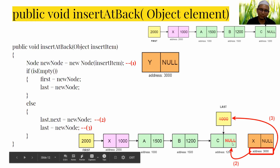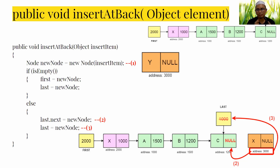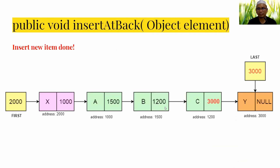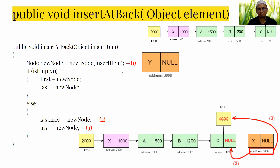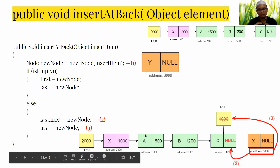Third, copy the address of the new node into last so that last always points to the last node in the list. You can go through the steps one by one to understand the process clearly.